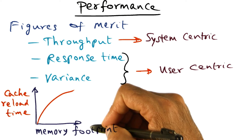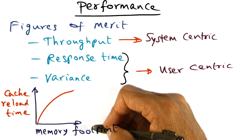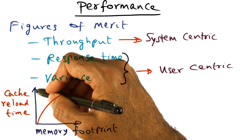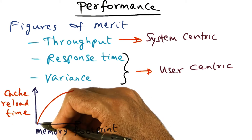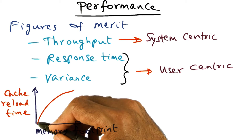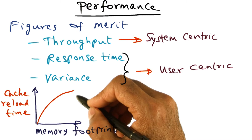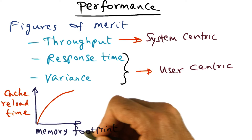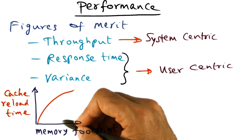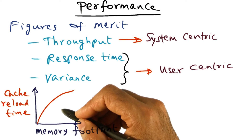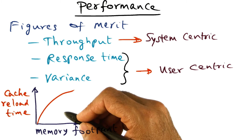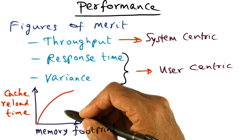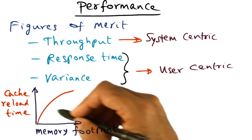If you look at the memory footprint of a process and the amount of time it takes to load all of its working set into the cache, the bigger the memory footprint, the more time it's going to take for the processor to get the working set of a particular thread into the cache so that the cache is warm enough and the thread can do its work without having to go to memory to fetch the contents into the cache.